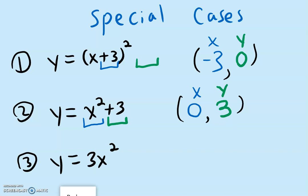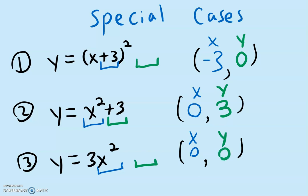And for this last example, we're actually missing both the x and the y coordinates. Because inside here, we do not have any number with the x, so the x will be 0. And for the y, we also don't have anything out here, so the y will also be 0. Notice this 3, because it is being multiplied, has nothing to do with the vertex, like we have seen in the examples before.